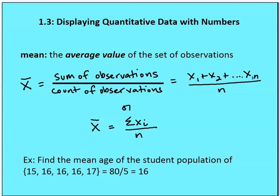For example, if I asked you to find the mean age of a student population where the population had five people ages 15, 16, 16, 16, and 17, then I would add each of those values together as a sum and then divide by the count of the observations. That would bring me to my mean, which in this case is 16.